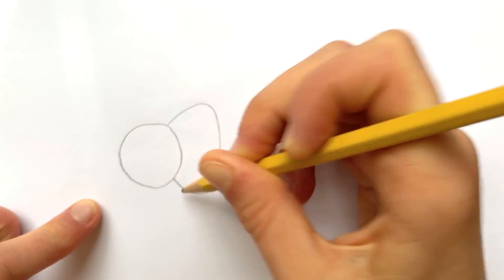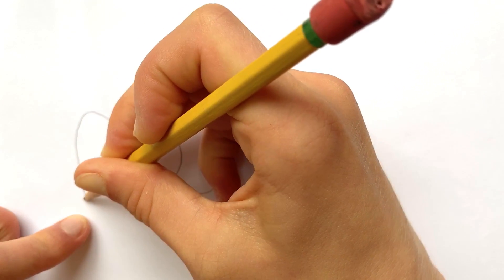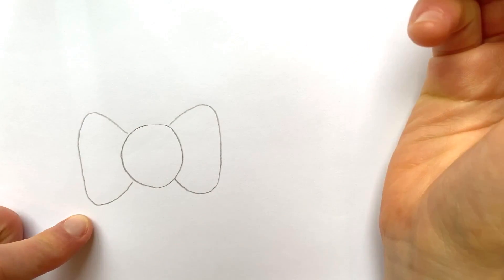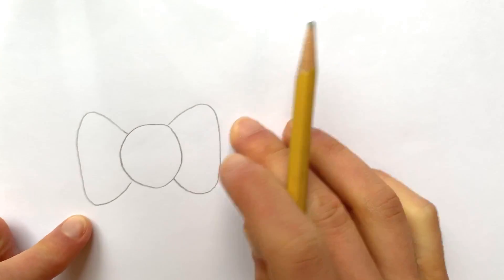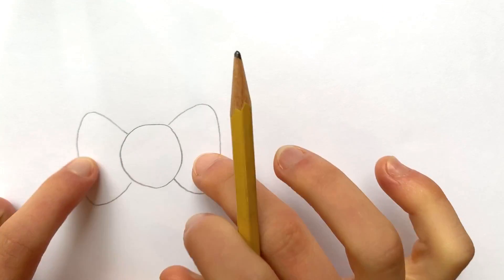It's almost like a big bow, like a bow tie or a bow on someone's head. That's kind of the look we're going for. These are obviously his ears, but if you need to think of it that way, it's a bow. So get that shape.